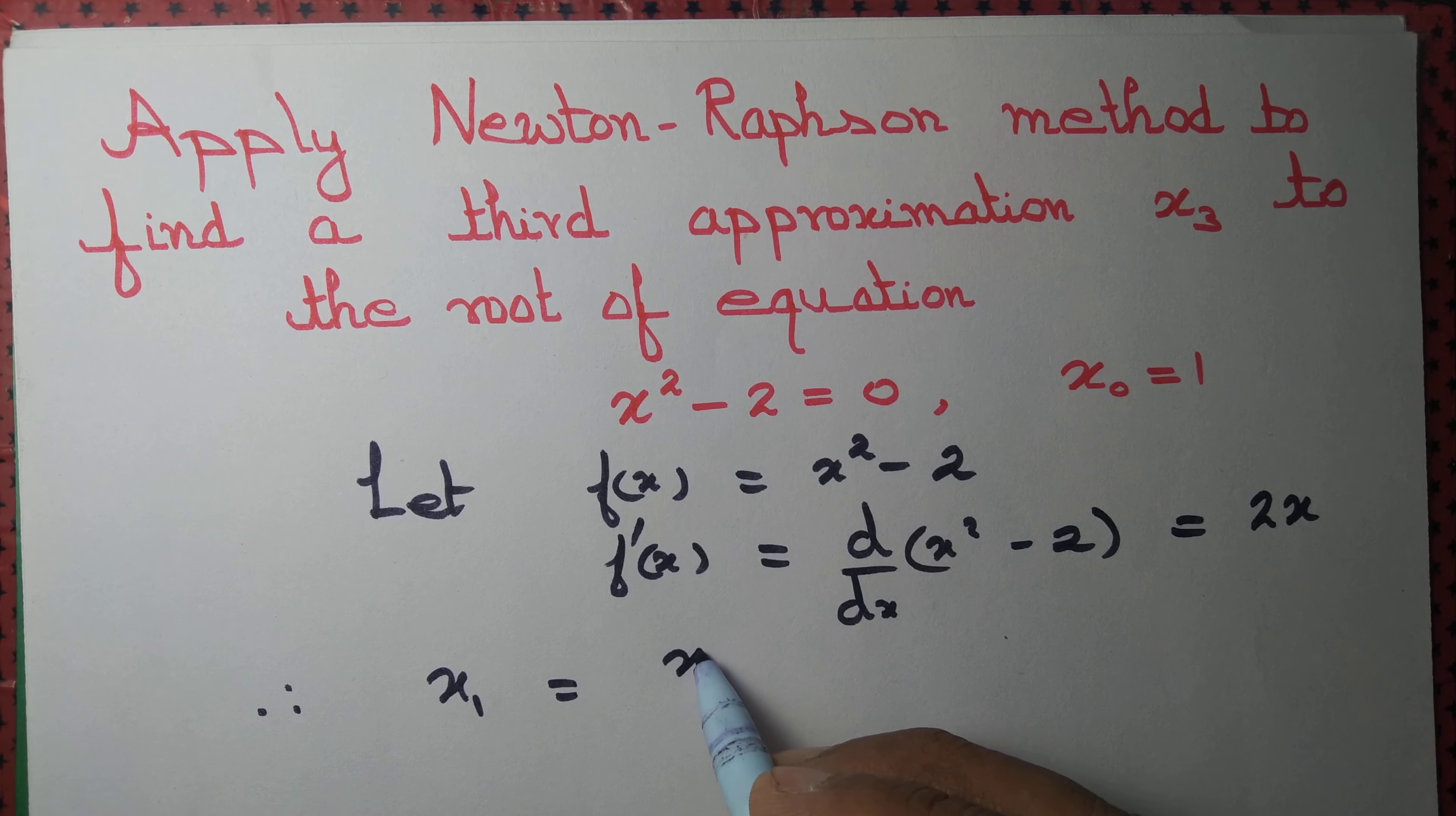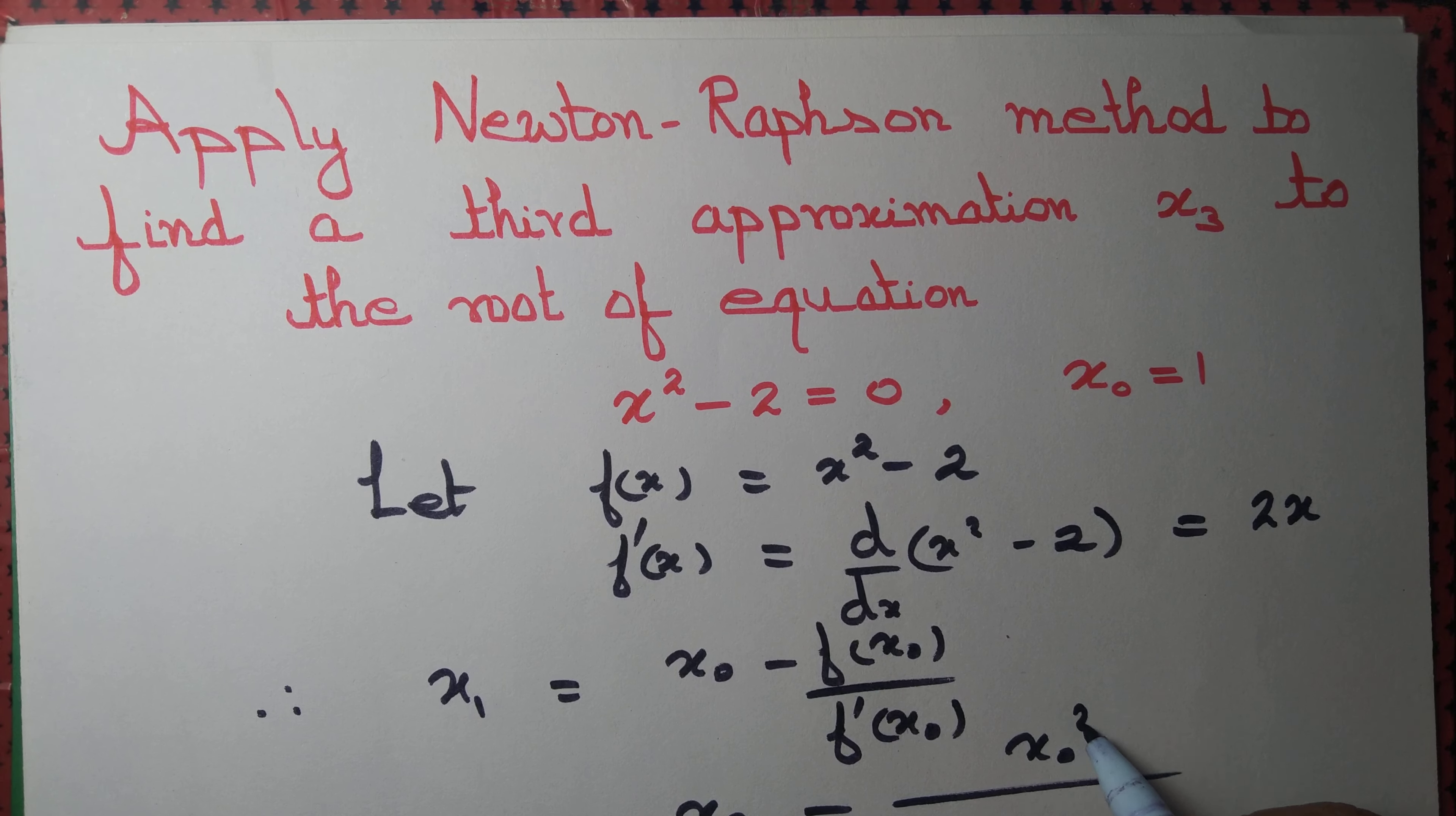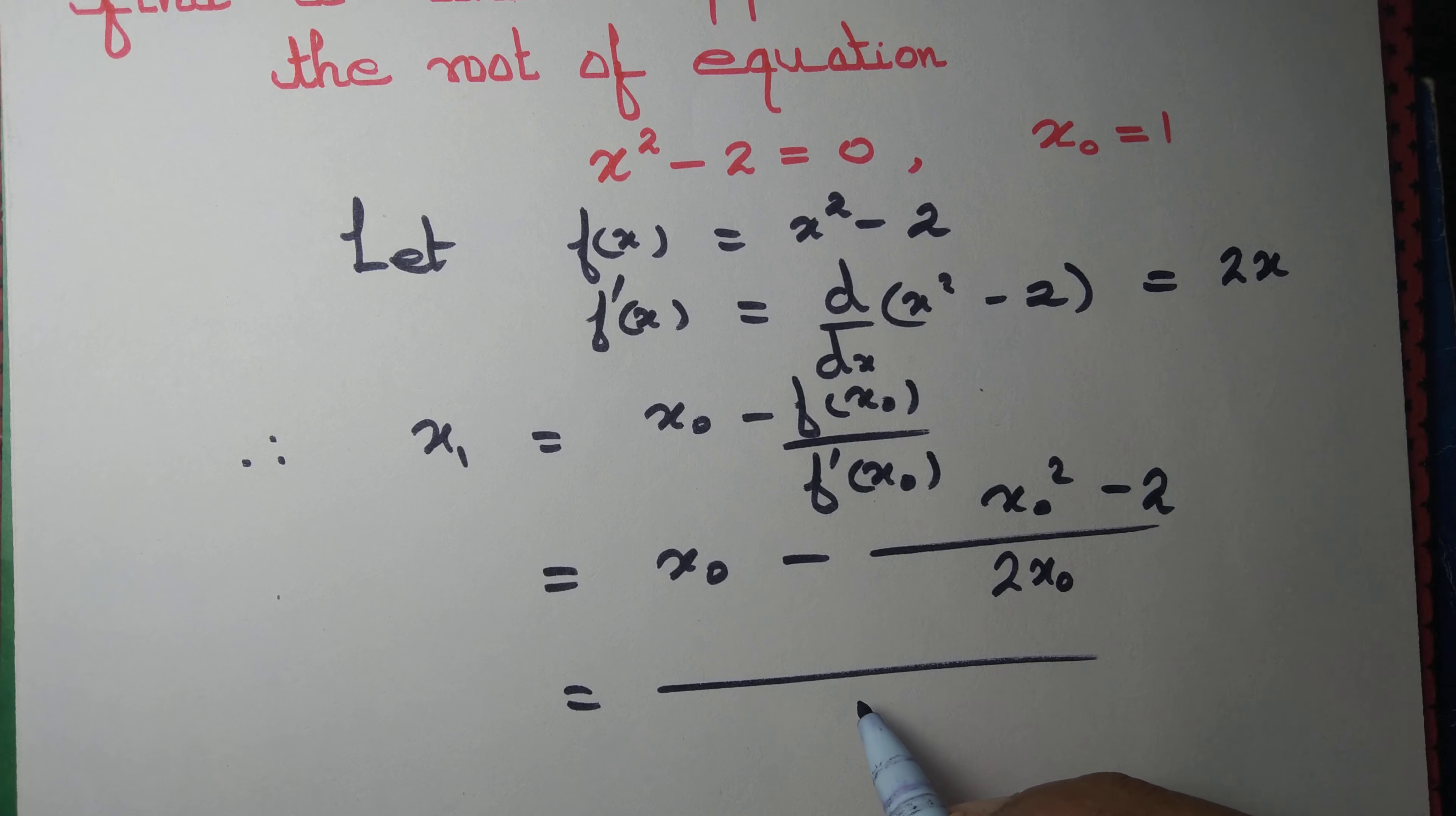x₁ is given by x₀ minus f(x₀) divided by f'(x₀). That equals x₀ minus (x₀² - 2) divided by 2x₀. Let's simplify it a bit further.